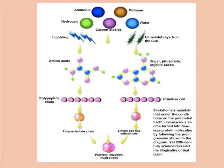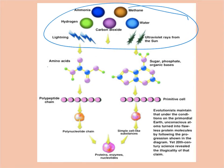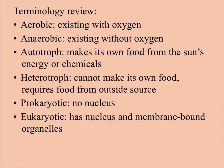This picture shows how recreating early Earth conditions could possibly produce monomers of organic compounds, which could then form cells. Some key terms to review: aerobic means requiring oxygen; anaerobic means existing without oxygen. Autotrophs make their own food through photosynthesis or chemosynthesis. Heterotrophs do not make their own food and must consume another organism. Prokaryotic cells have no nucleus and no organelles; eukaryotic cells have a nucleus and many organelles.